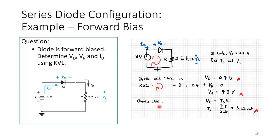Using Ohm's law, VR equals ID times R. VR is 7.3 volts, which we just found, and R is 2.2 kilohms. So the diode current ID is 3.32 milliamps.